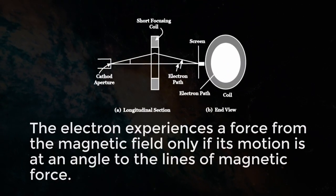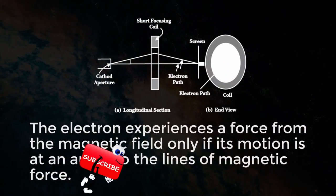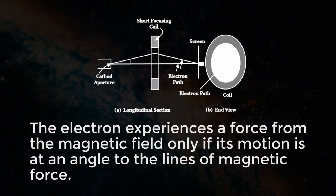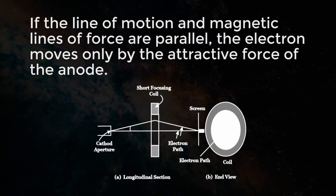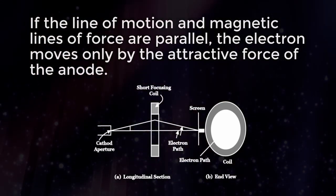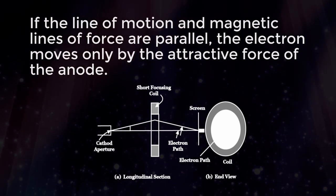The electron experiences a force from the magnetic field only if its motion is at an angle to the lines of magnetic force. If the line of motion and magnetic lines of force are parallel, the electron moves only by the attractive force of the anode.